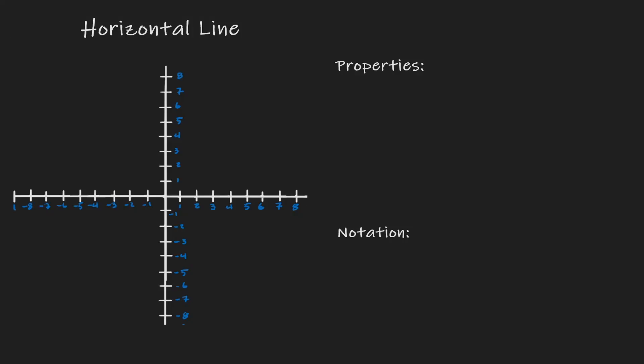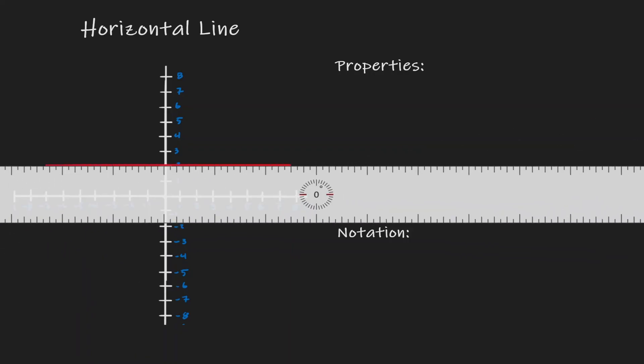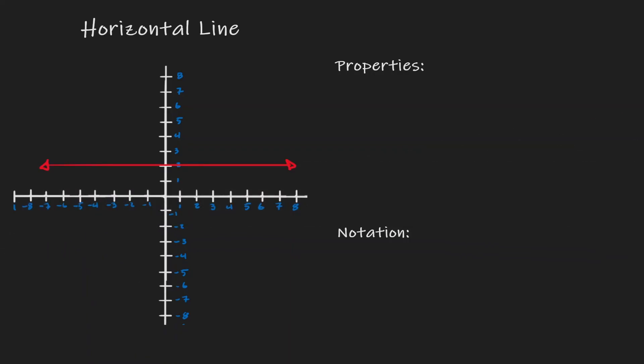Let's discuss the idea of reflecting over a horizontal line. Let's draw a random horizontal line. We can define this line by the equation y equals 2.